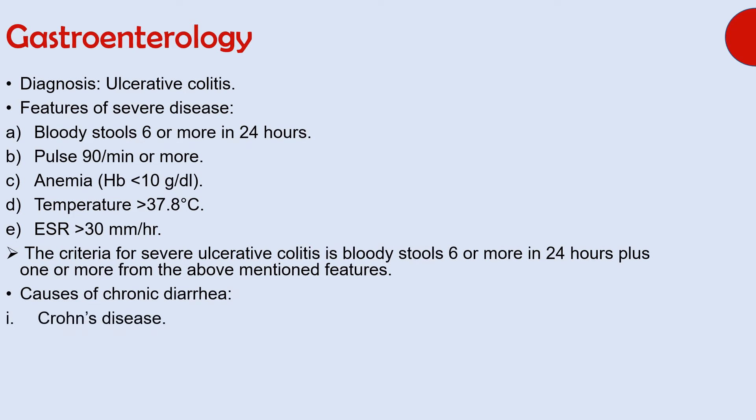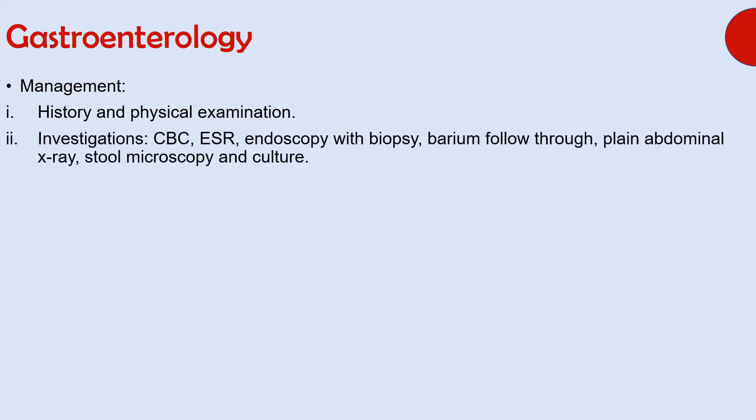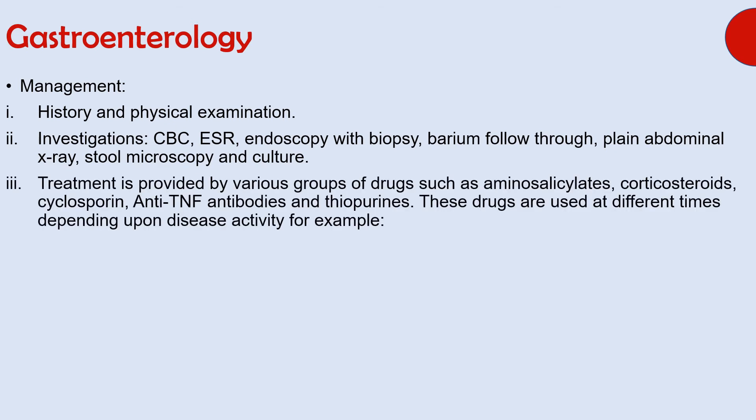The question also asked about other causes of chronic diarrhea, and they include Crohn's disease, celiac disease, ischemic colitis, and colonic carcinoma. Management begins with history and physical examination followed by investigations, which include complete blood count, ESR, endoscopy with biopsy — this is diagnostic for ulcerative colitis and includes ileocolonoscopy or sigmoidoscopy — as well as barium follow-through, plain abdominal X-ray, and stool microscopy and culture.